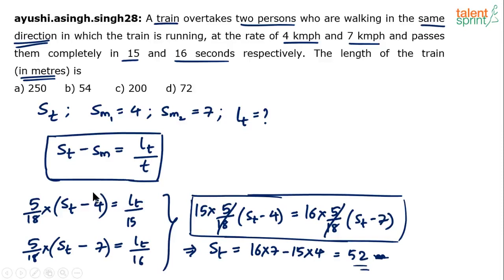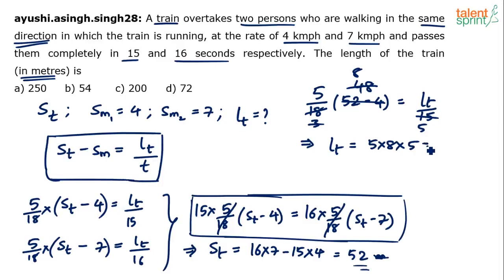Now substitute this back. 52 kilometres per hour of course. Now substitute this back in one of the equations. So I can say 5 by 18 into 52 minus 4 equals Lt by 15. So 52 minus 4 is 48. 48 by 18 is 8 by 3. This here goes 5 times. So Lt is equal to 5 into 8 into 5, so 25 times 8 is 200, 200 metres.